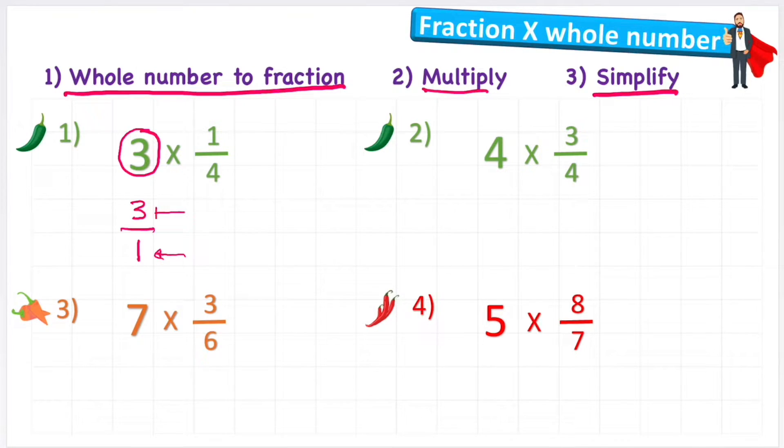Our numerator shows that we have 3 wholes which is the same as saying 3. Now that we've converted our whole number to a fraction we can just put our multiplication sign and the other fraction which is 1 quarter.